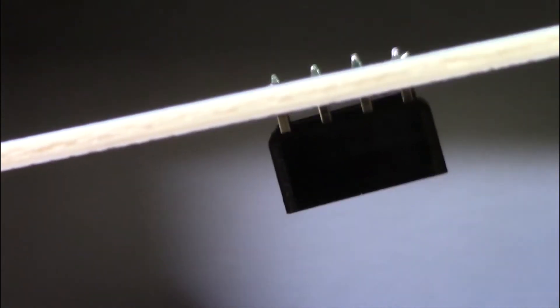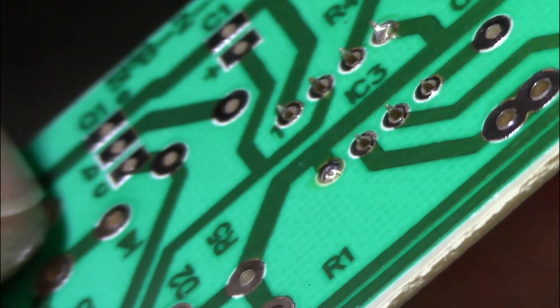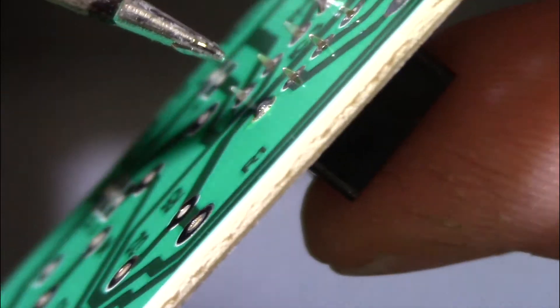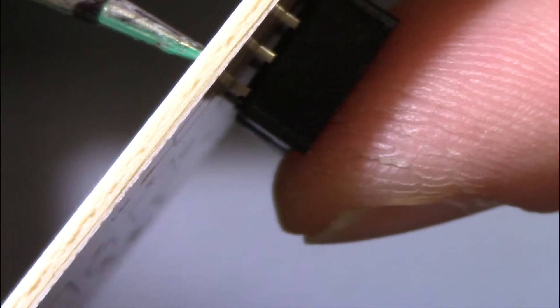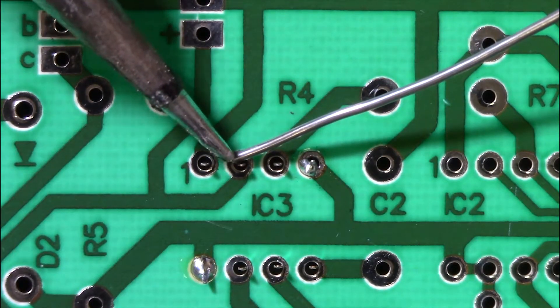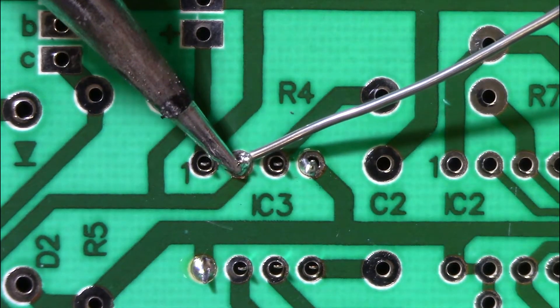Apply a small amount of solder to the two diagonal pins and check that the socket is flat against the board. If it is not, hold the PCB in your hand with one finger pushing on the socket while you reheat the diagonal solder joints. The socket should lie flat against the PCB. Then you'll solder all the socket pins and re-solder the two diagonal pins.